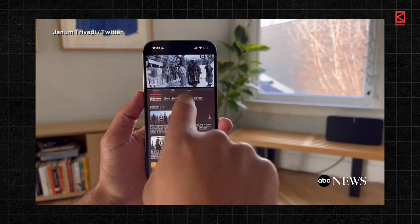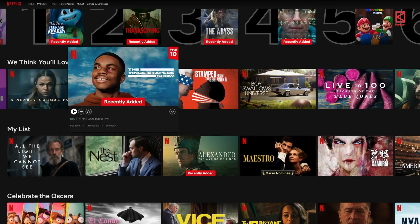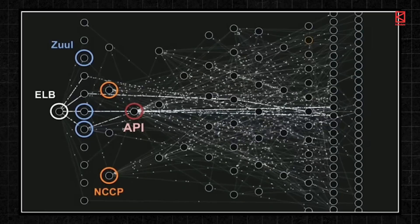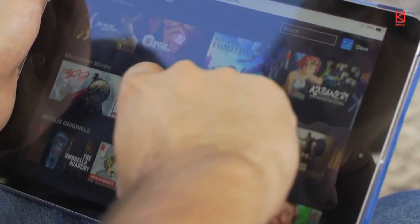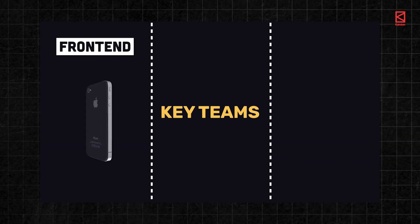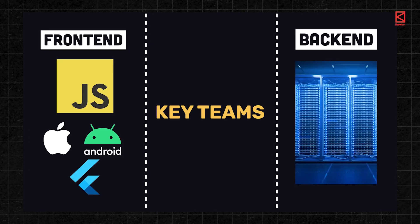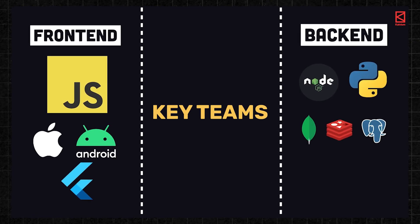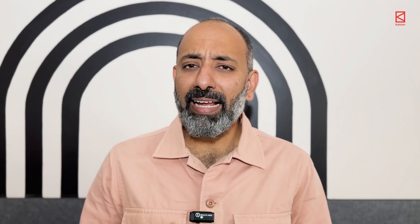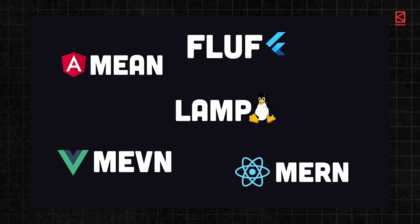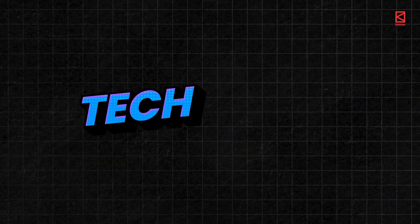What you see on the screen is just the front end. Behind the scenes, a system handles millions of users in real-time. To build these apps, companies have two key teams: front end developers that design the app's look and experience, and back end developers who build the system that keeps everything running. Both these teams use a variety of tools and programming languages, and this combination is called a tech stack.